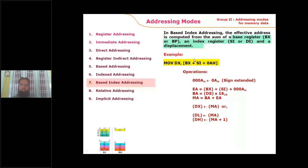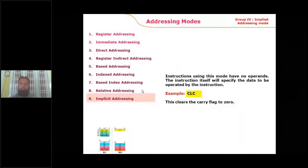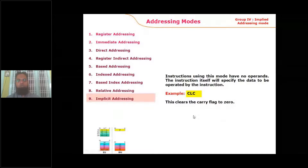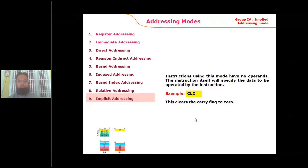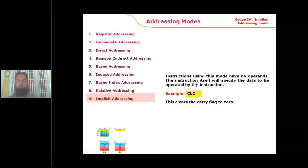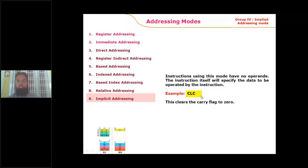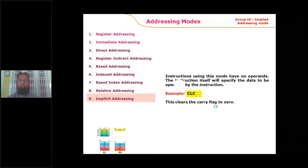Implicit addressing mode is used when no operand is visible in the instruction, but an operand is implicitly involved. For example, CLC (Clear Carry Flag) performs an operation on the carry flag — the carry flag is not written as an operand, but the instruction implicitly operates on it. That is why this is called implicit addressing mode.